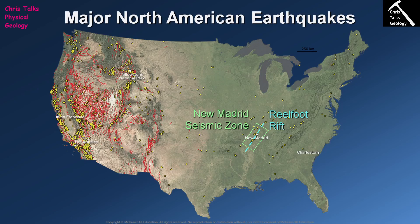The Reelfoot Rift formed about 600 million years ago and is a failed continental divergent plate boundary. About 600 million years ago — the late Precambrian — North America made an attempt to tear itself in two by forming a continental rift valley, similar to the modern East African Rift Valley. This formed a large linear trench running approximately northeast to southwest through the area now known as New Madrid. Because this area was under extension, very large normal faults were created, and these normal faults are still present in the basement rocks and are believed to be causing the earthquake activity seen today.